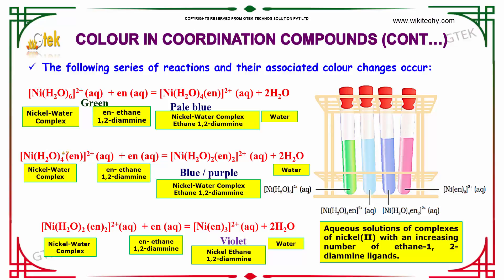The pale blue complex is reacted again with ethane-1,2-diamine, giving a blue or purple color for Ni(H₂O)₂(en)₂ with water. Once again, adding ethane-1,2-diamine produces a violet nickel tris(ethane-1,2-diamine) complex. This is how the color changes happen — from green to pale blue to violet.